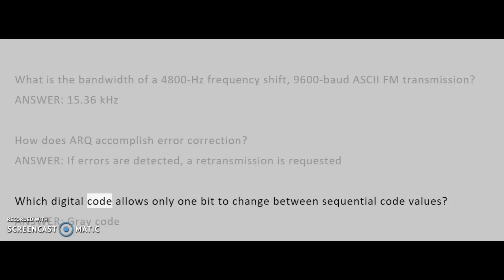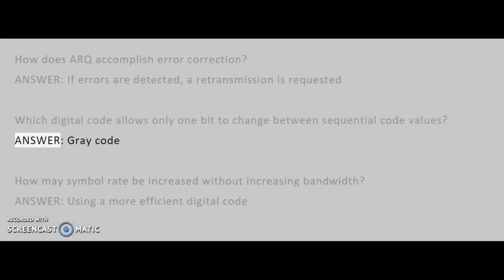Which digital code allows only 1 bit to change between sequential code values? Answer: Gray code.